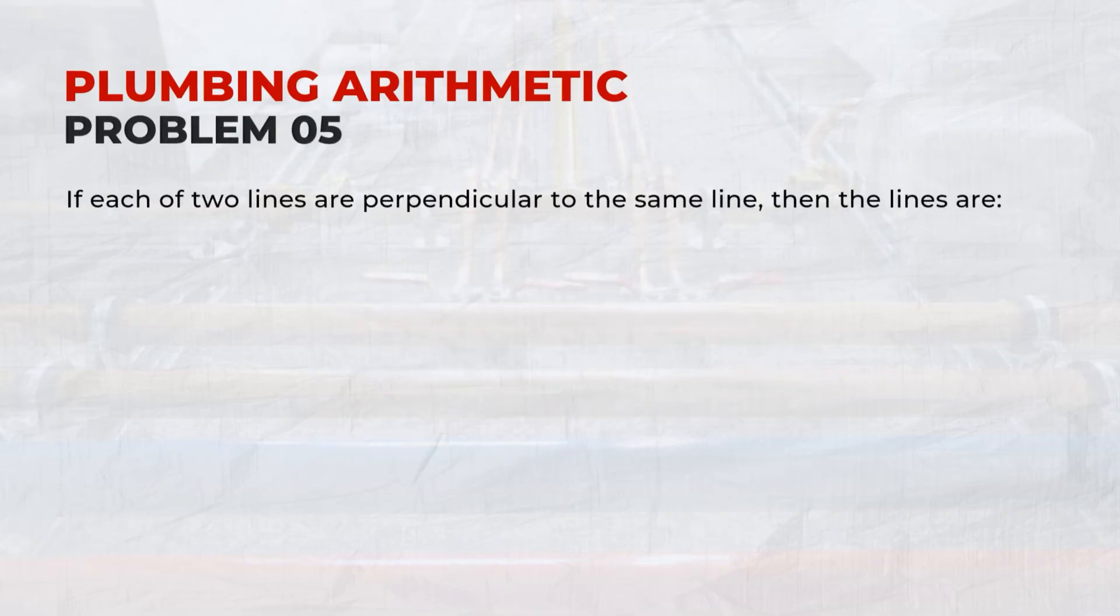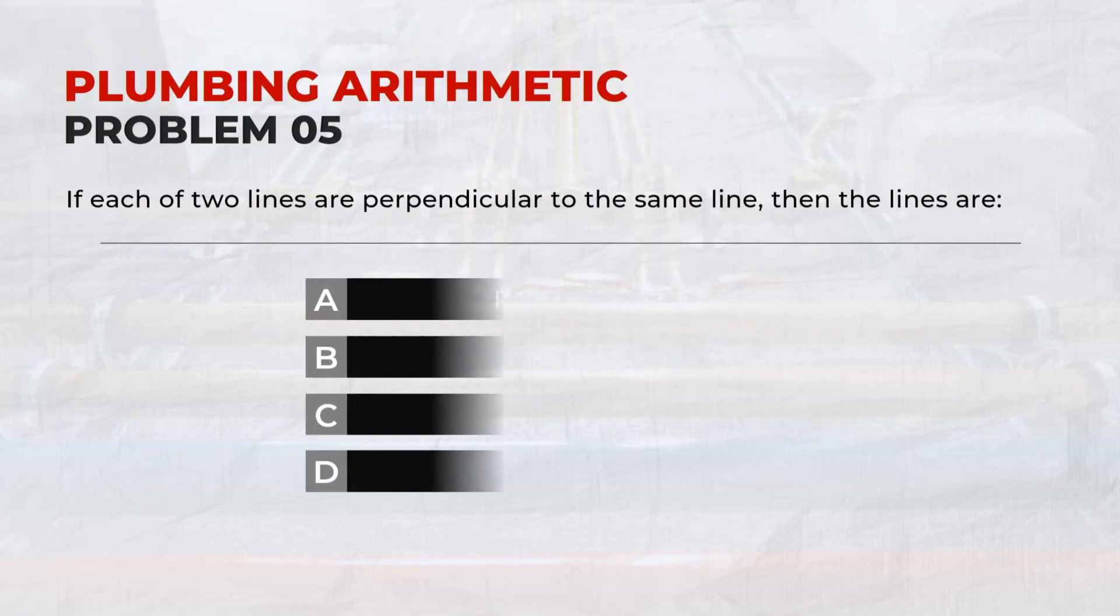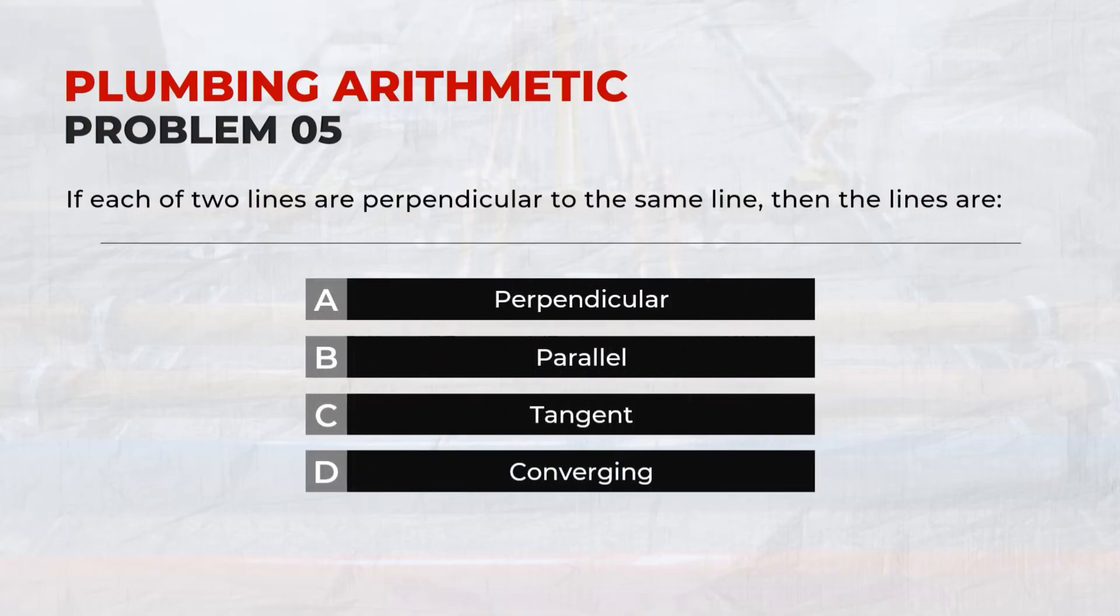If each of two lines are perpendicular to the same line, then the lines are? B. Parallel.